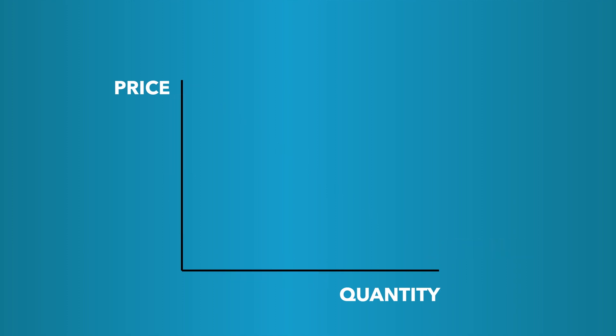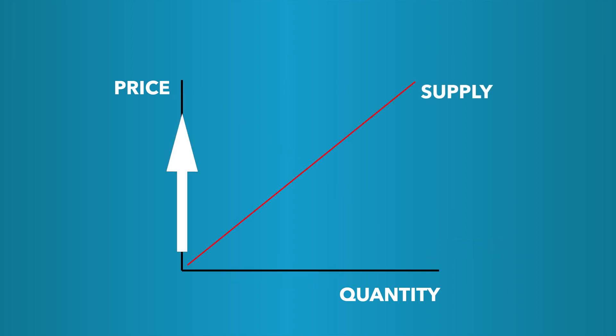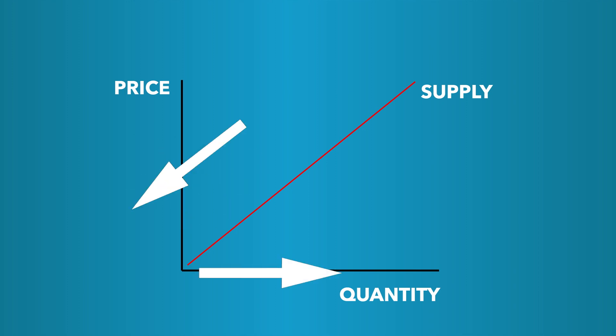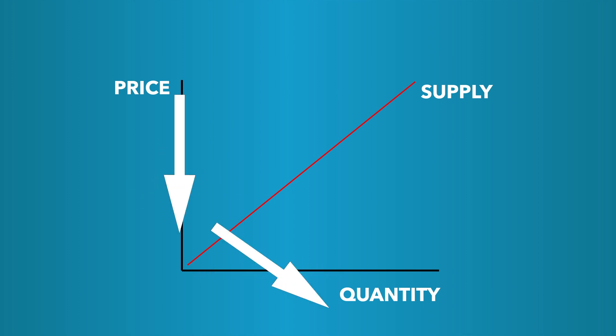The supply curve provides the opposite information, which is the higher the price, the higher the quantity supplied. And the lower the price, the lower the quantity supplied.